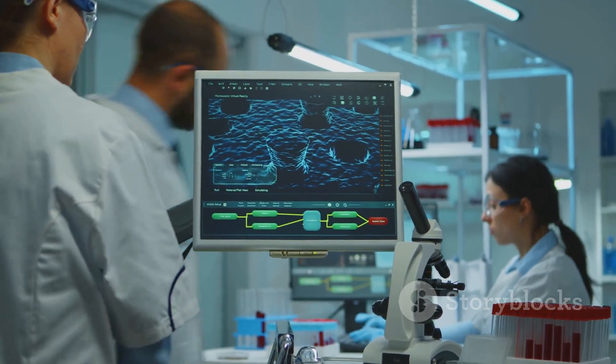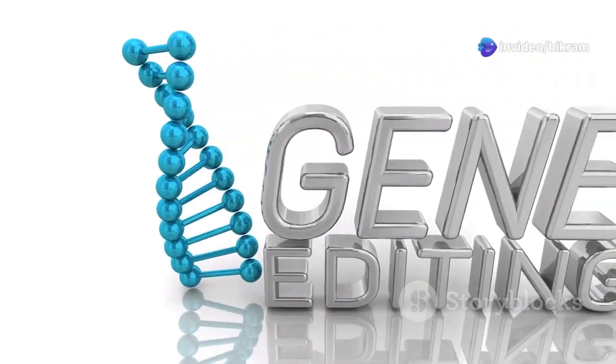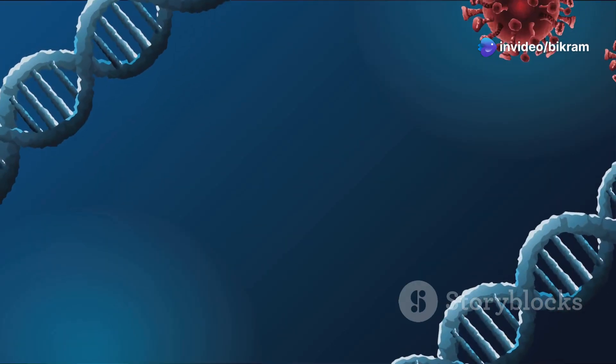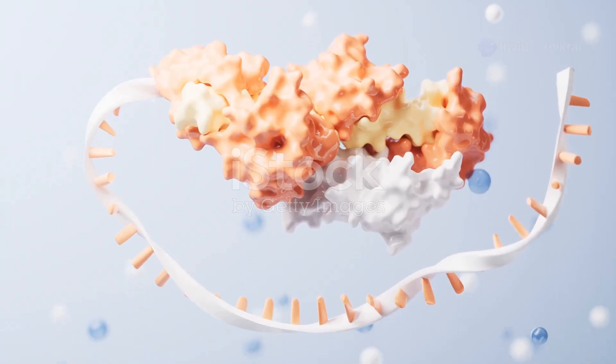Scientists have discovered a remarkable process called RNA interference, or RNAi. This process allows RNA to silence genes. Imagine a conductor silencing a specific section of the orchestra. RNA works in a similar way.